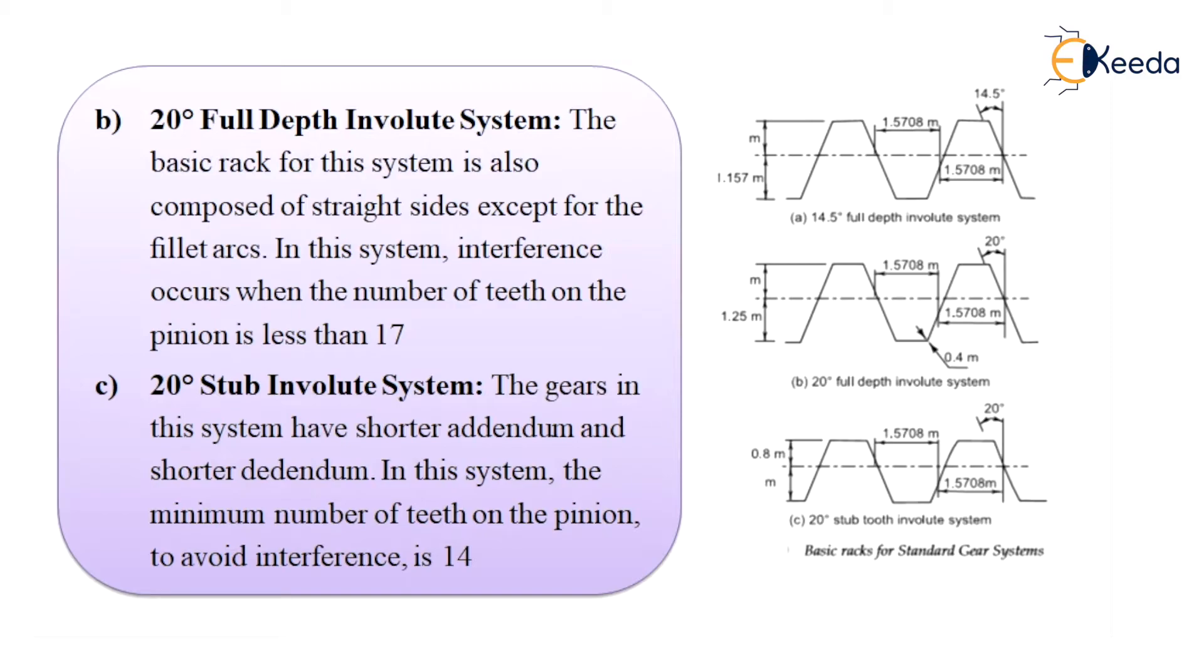The next system is 20 degree full depth involute system. The basic rack for this system is also composed of straight sides except for the fillet arcs. In this system, interference occurs when the number of teeth on pinion is less than 17. The 20 degree pressure angle system with full depth involute teeth is widely used in practice.